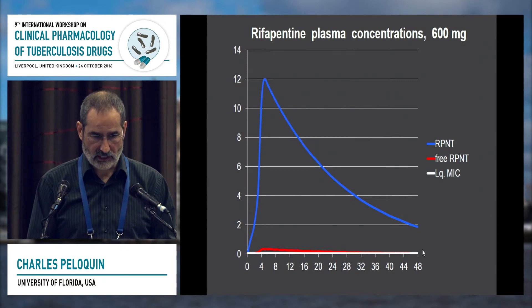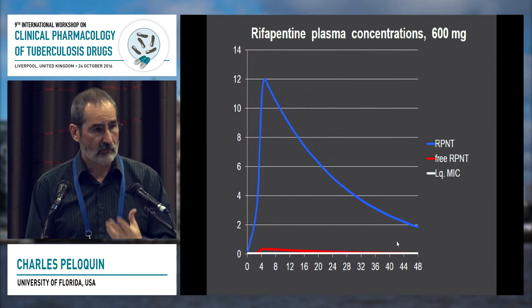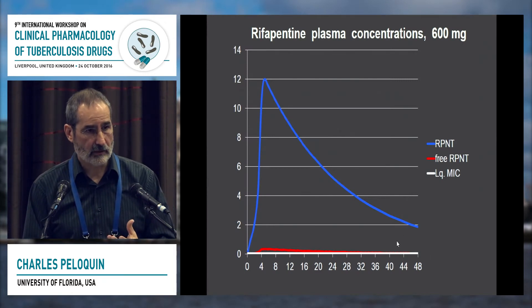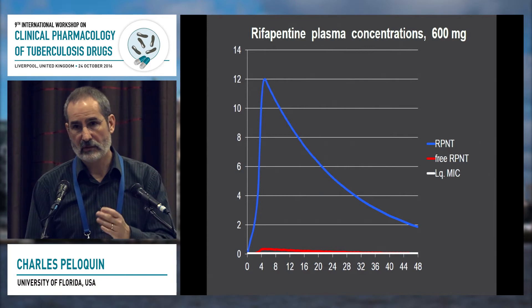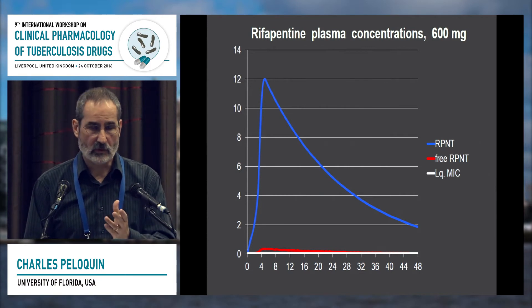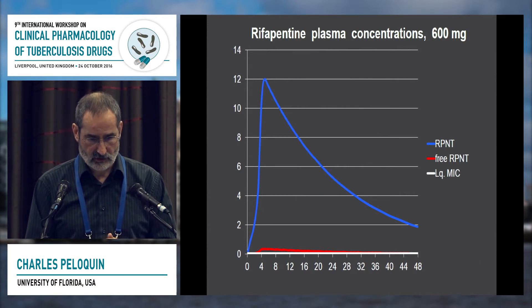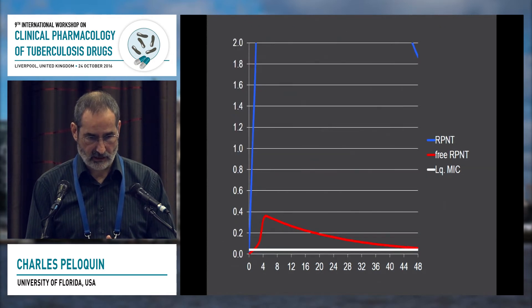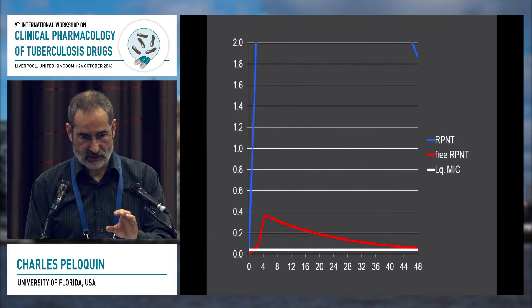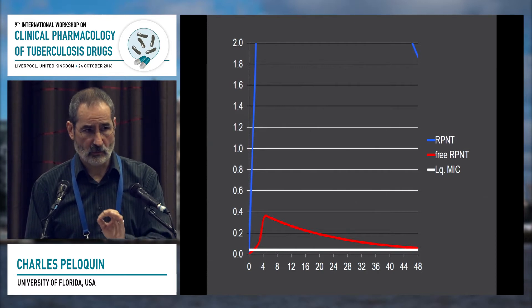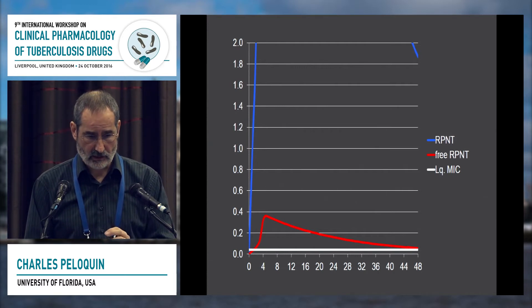If we look at the concentrations, they are proportionally higher than you see with rifampin — maybe a third, maybe a quarter, depending on the data you look at. But the free drug concentrations are rather low. The free drug concentrations hang around longer than rifampin's, but they're considerably lower.